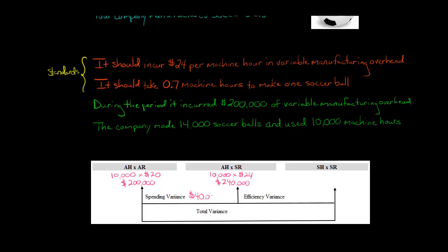Now, if we take the difference between $200,000 and $240,000, that's a $40,000 difference. Now the question is, is this variable overhead spending variance favorable or unfavorable?